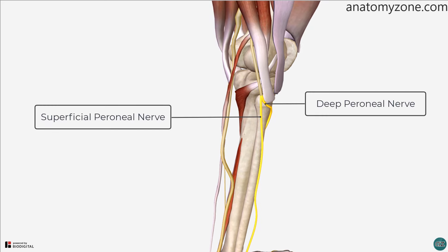The common peroneal nerve is susceptible to injury or compression as it winds over the fibular neck, which can result in foot drop.